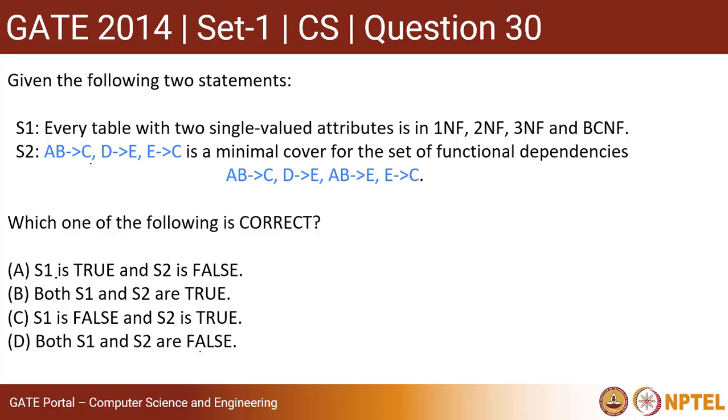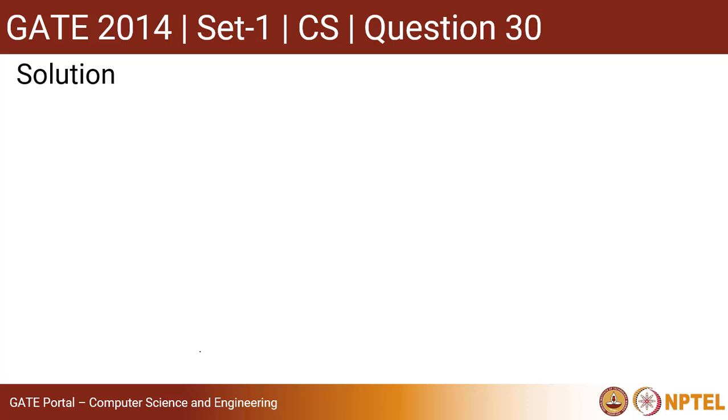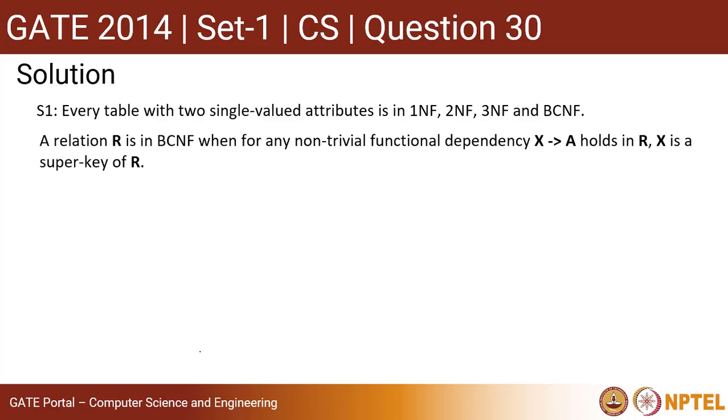So let us go for the solution. We'll first check statement one. In this case, if my relation is in BCNF, then it is already in 3NF, 2NF and 1NF. So we'll start with BCNF if the relation is in BCNF.